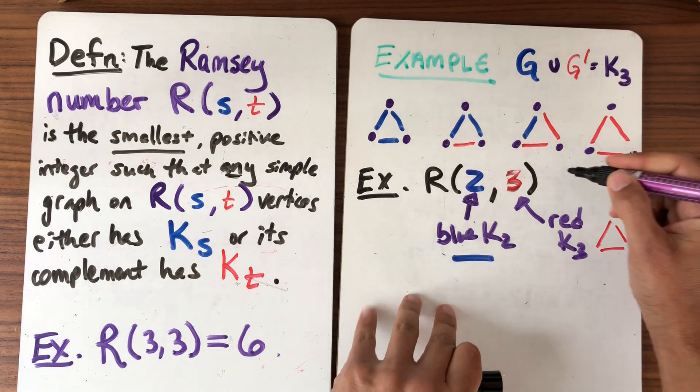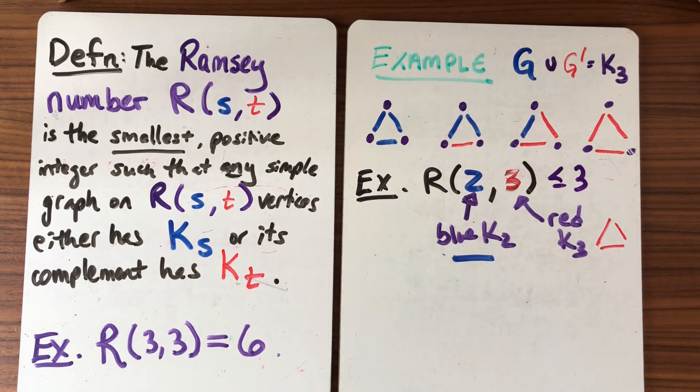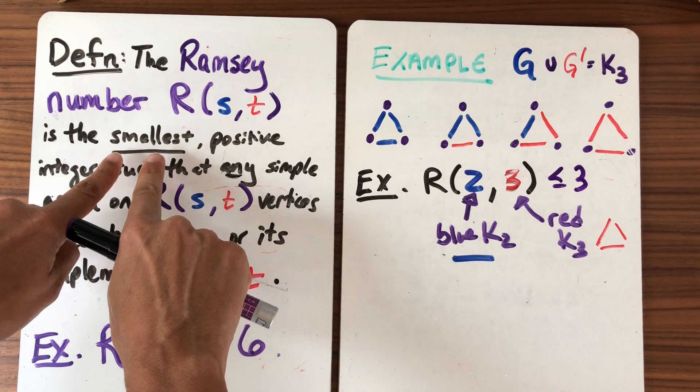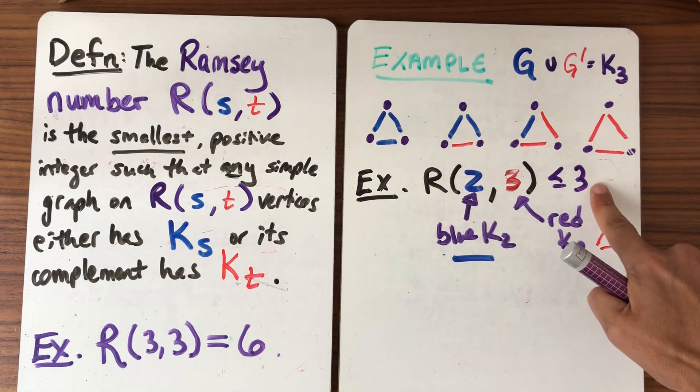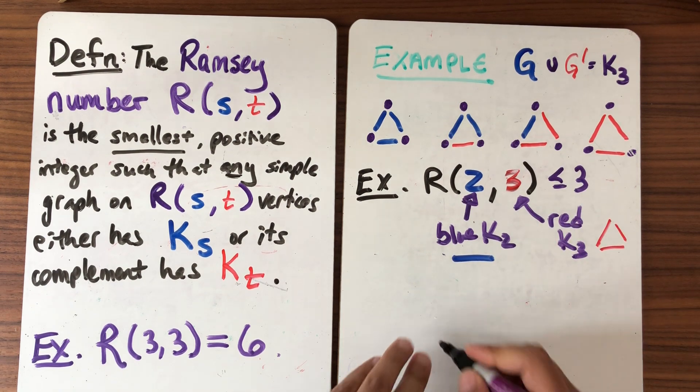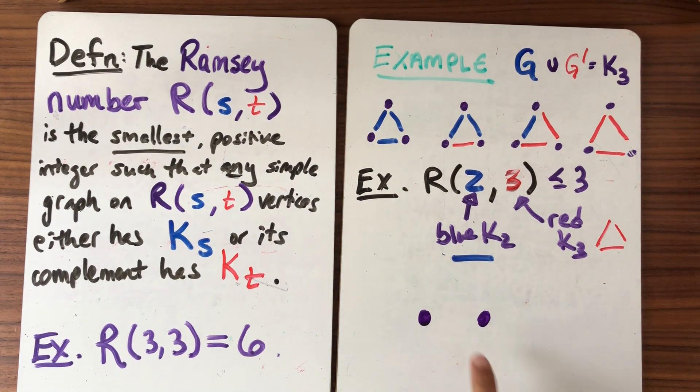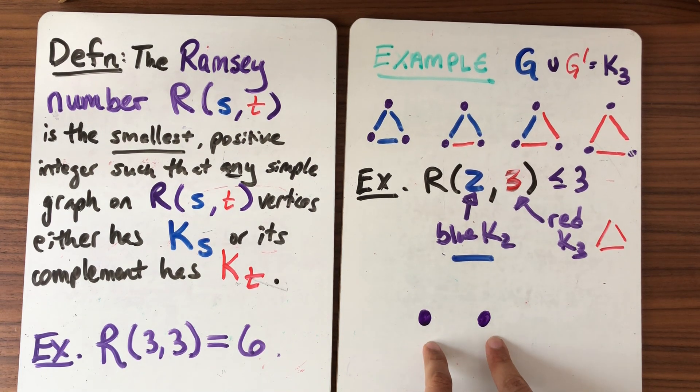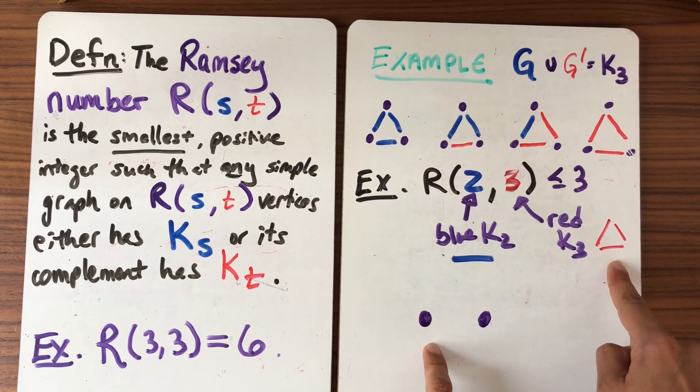So that tells me that this number is at most 3. In order to prove that it's actually equal to 3 I have to prove that this is the smallest number. So what do I need to do? I need to take the next number down and prove that I can draw it. So the next number down is 2. So I'm gonna draw a graph, the complete graph on two vertices, and I want to make sure that I do not have a blue K_2 and I do not have a red K_3.